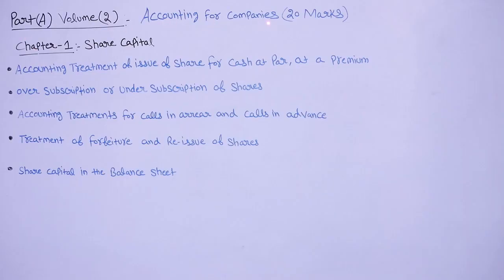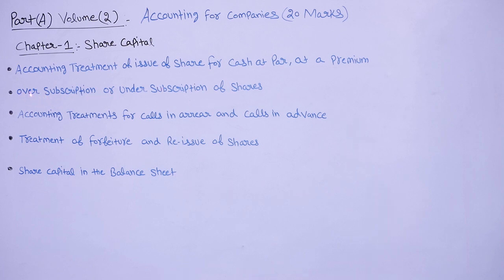Part A, Volume 2 is accounting for companies — its weightage is 20 marks. There are three chapters. Chapter 1 is share capital, where you will learn about the issue of shares at par or at premium, and conditions of oversubscription or undersubscription. For example, if a company issues 1,000 shares and receives requests for 1,200 shares, that is oversubscription. If requests come for only 800 shares, that is undersubscription.